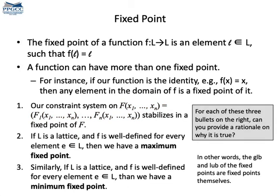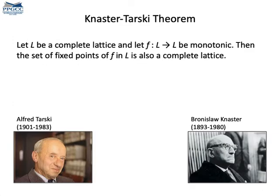Fixed points of functions that range on lattices have lots of interesting properties. For instance, the LUB — the least upper bound — of two fixed points is also a fixed point. The same is true for the GLB, the greatest lower bound, of two fixed points. These relations are subsumed by what is today called the Knaster-Tarski theorem, which says that the set of fixed points of a monotone function that ranges on a lattice also forms a lattice.